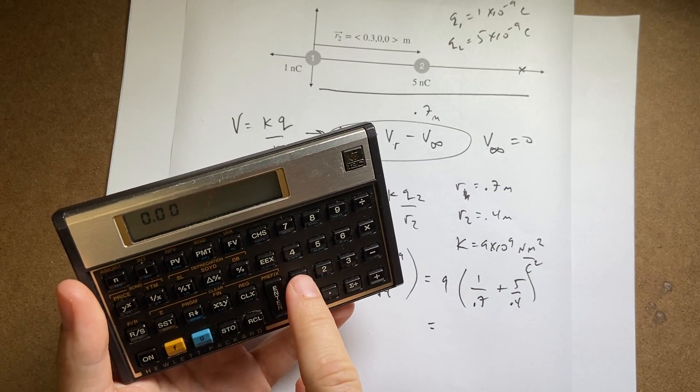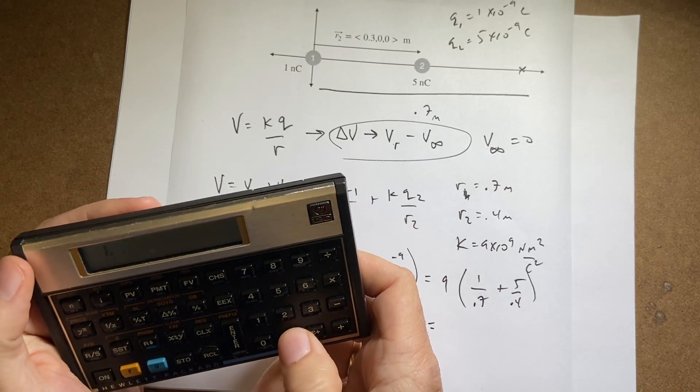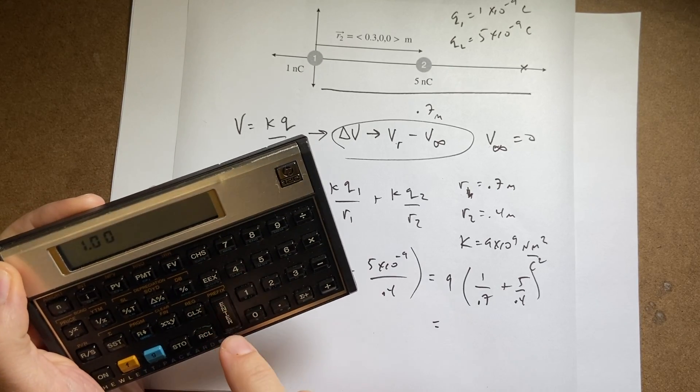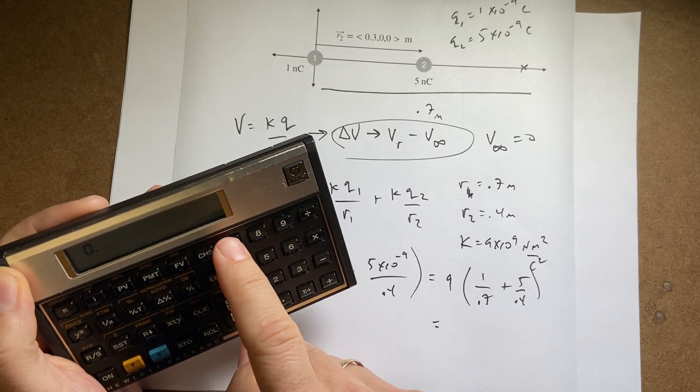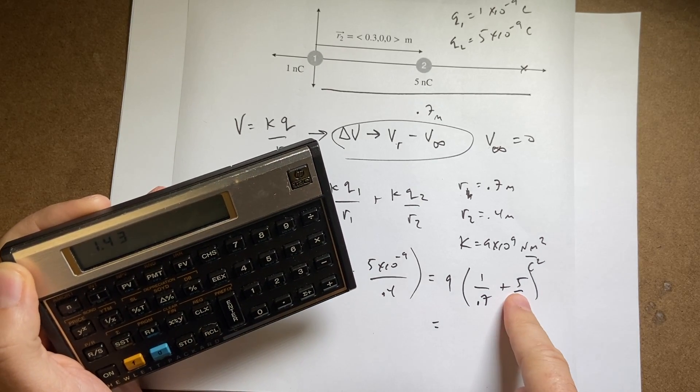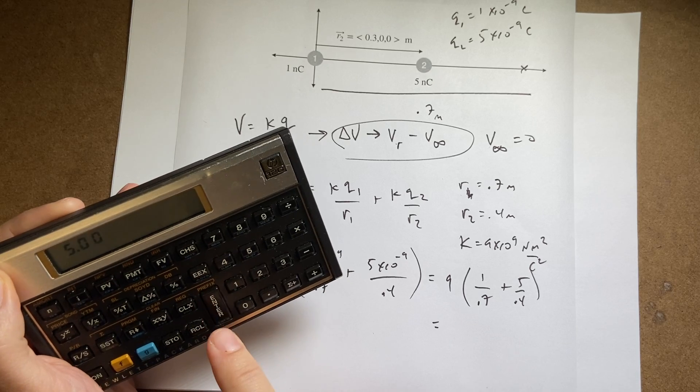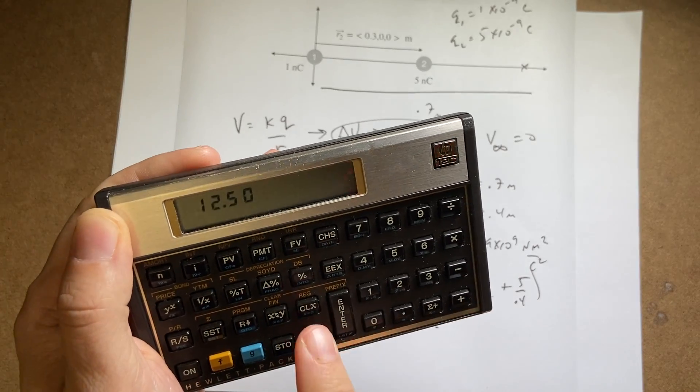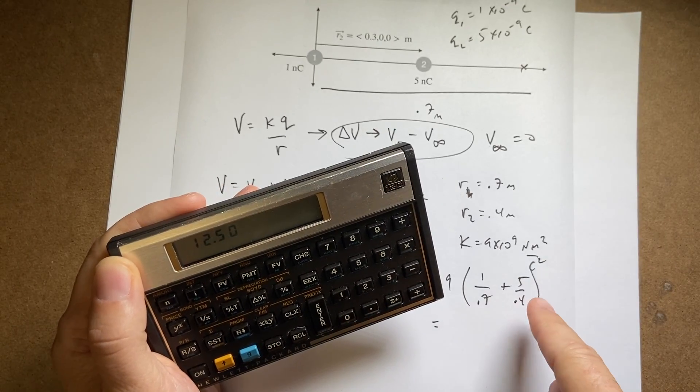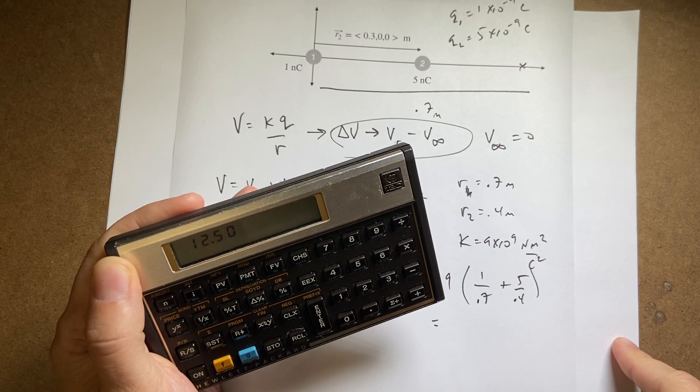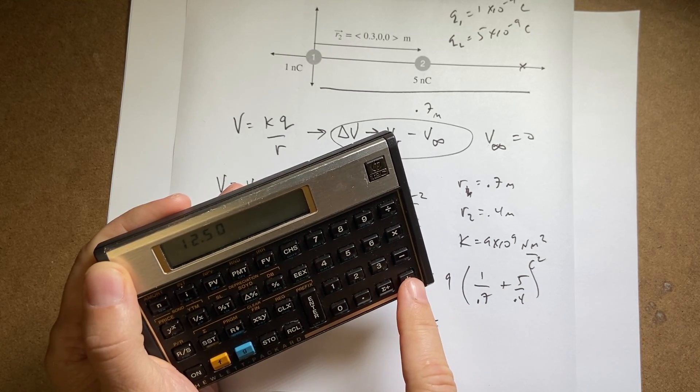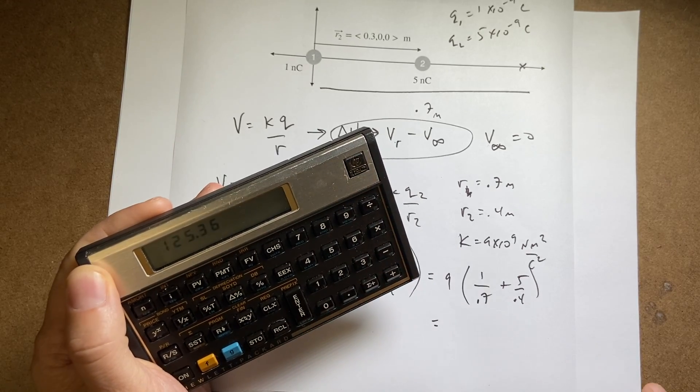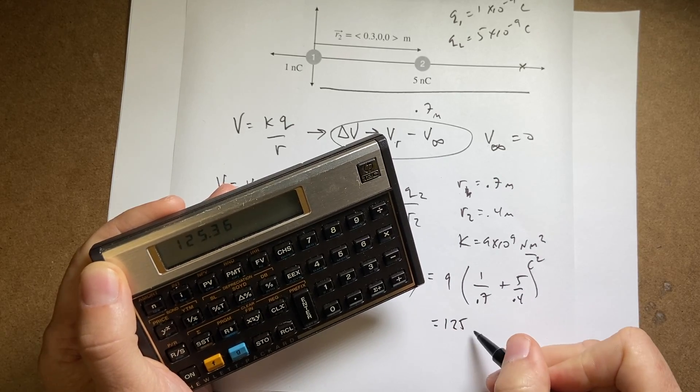So I'm going to first calculate this: 1 enter, 0.7... oops, clear. So I get 1 enter and then I have 0.7 divided by, and then I need to do this one: it's going to be 5 enter, 0.4 divided by. Now I have that first number still in the stack. Okay, this has like a stack of numbers up here, and so you always enter the two operands and then the operator—that's how this works. So I have those two numbers and I just need to add them together, so if I just push plus it adds them together. There you go. Now I need to multiply that by 9, so I'm going to say 9 times, and I think this is the right answer: 125.4 volts.